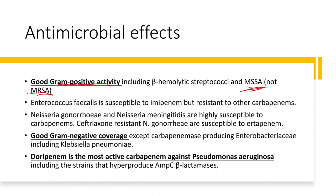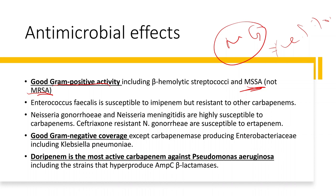Enterococcus faecalis is susceptible to imipenem but resistant to other carbapenems — so for enterococcal infections, use imipenem if choosing a carbapenem. Neisseria gonorrhoeae and Neisseria meningitidis are highly susceptible to carbapenems. When there is ceftriaxone-resistant Neisseria gonorrhoeae — ceftriaxone being the usual first-line single 250 mg IM dose — the best alternative is a carbapenem.